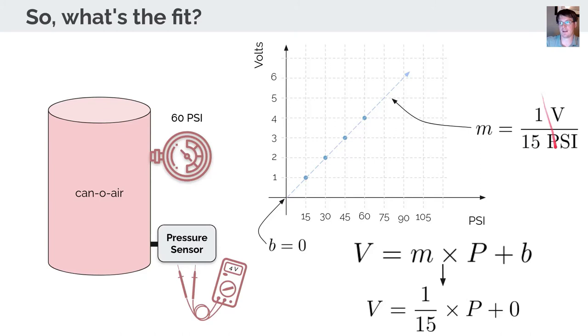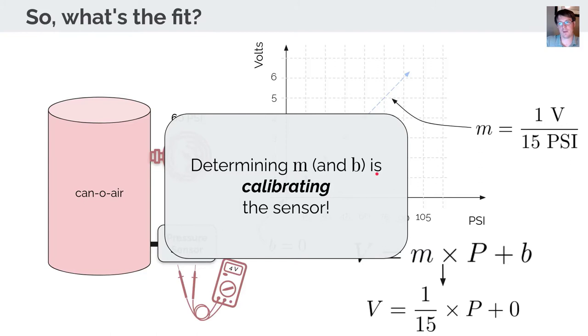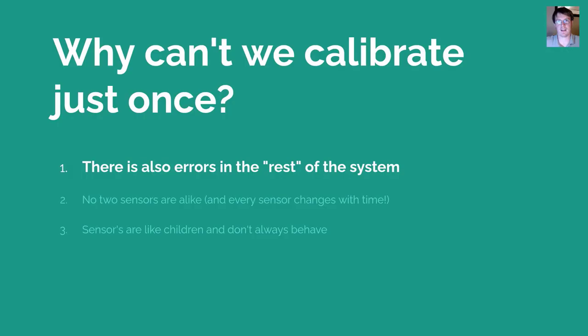Most sensor systems determine m and b for you — you just provide the measurements. You might ask why the factory can't just hard-code the calibration. There are a few good reasons, and we'll look at three primary ones.